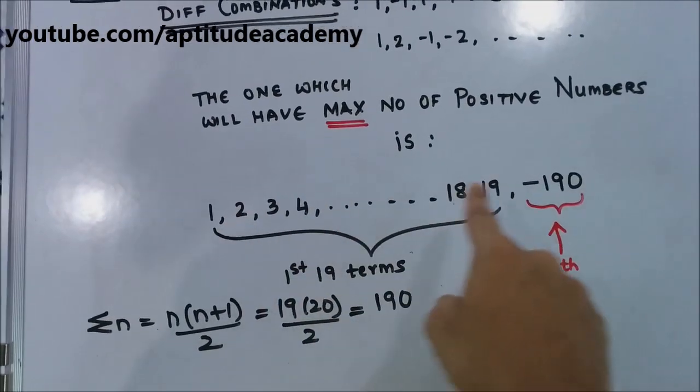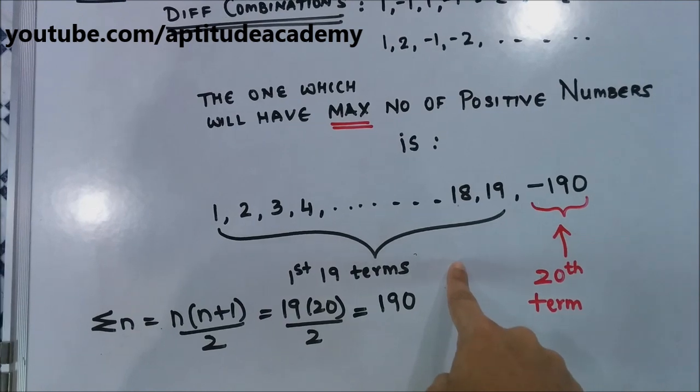Now see, you've got 1 through 19 here. So now the first 19 terms, these are natural numbers.